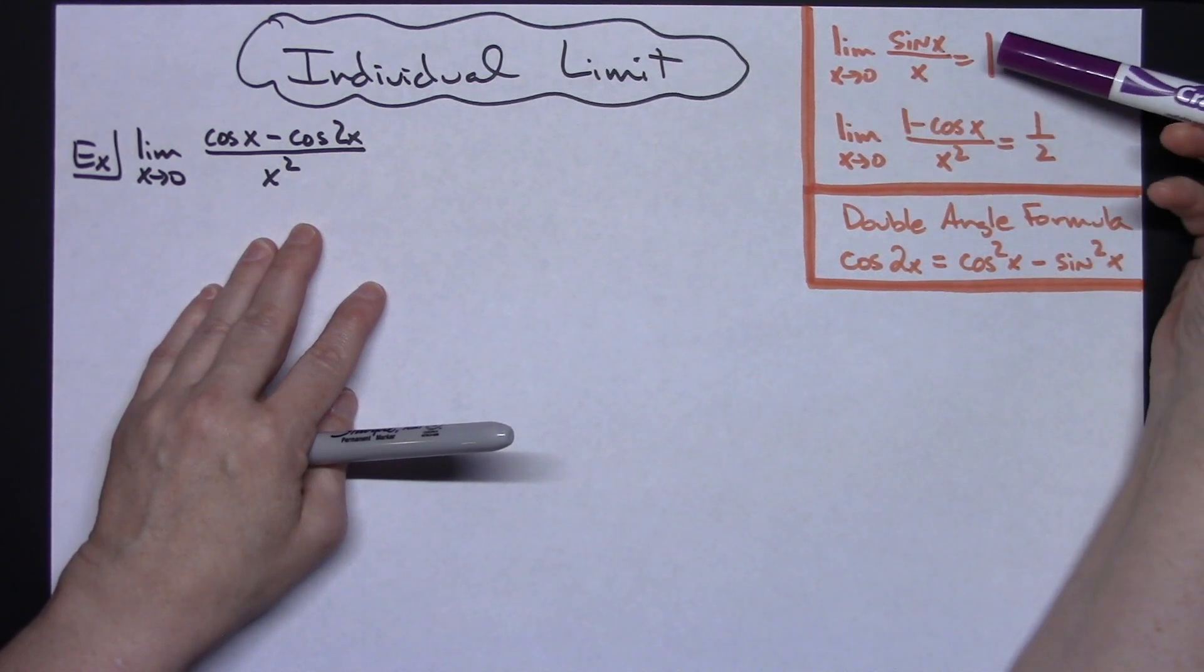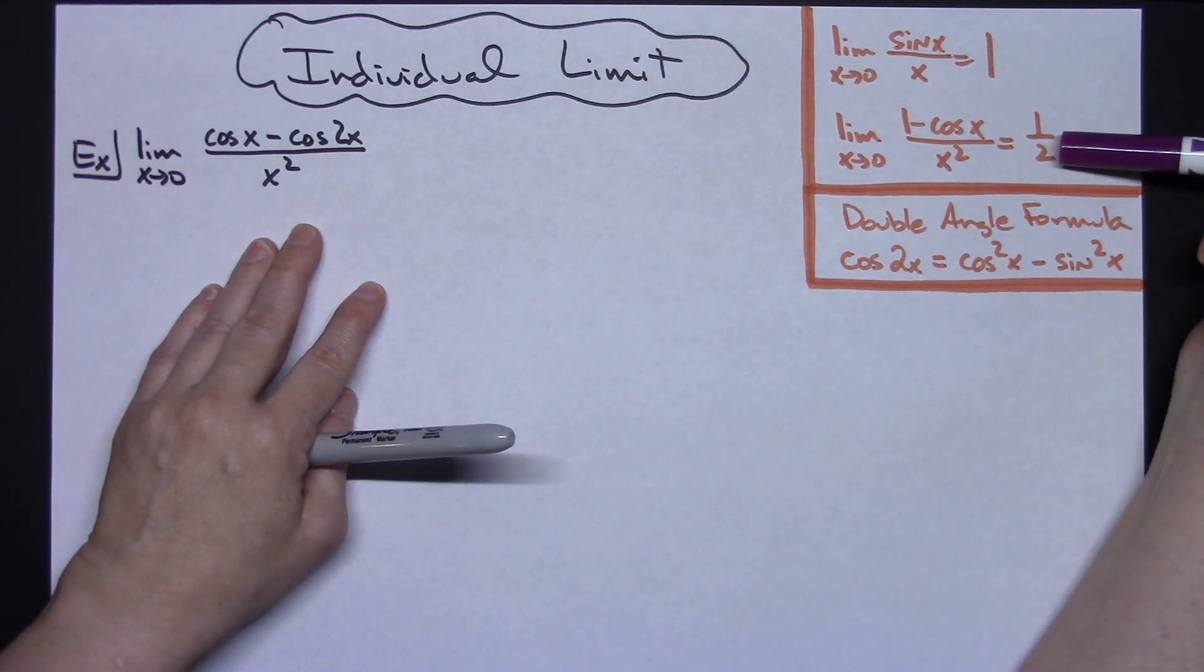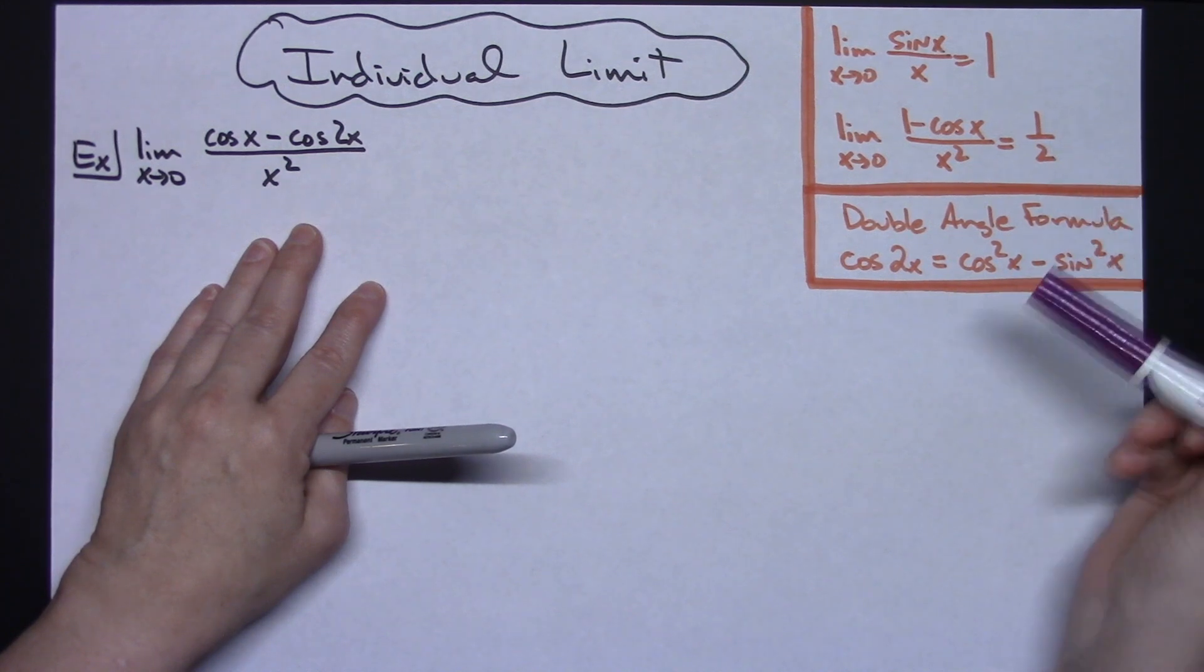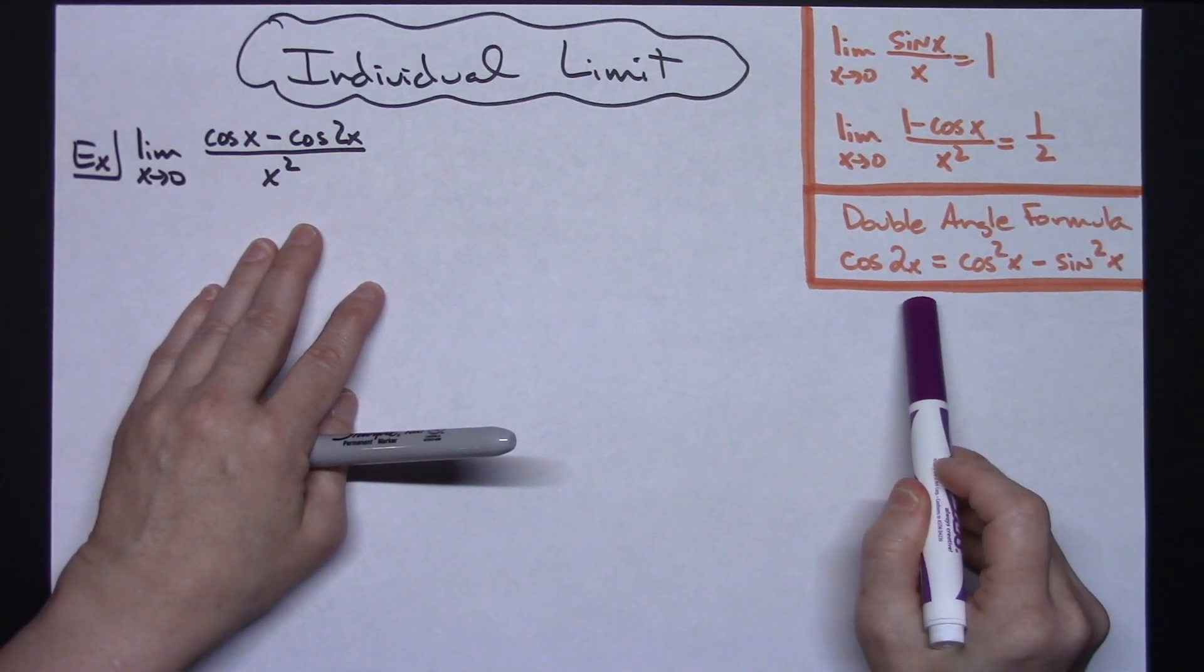The limit as x approaches 0 of sine x over x is 1, and we will use that. We will also use the one where the limit as x approaches 0 of 1 minus cosine x over x squared is a half. So two very good properties to know for your limits. And then we're also going to be doing a substitution